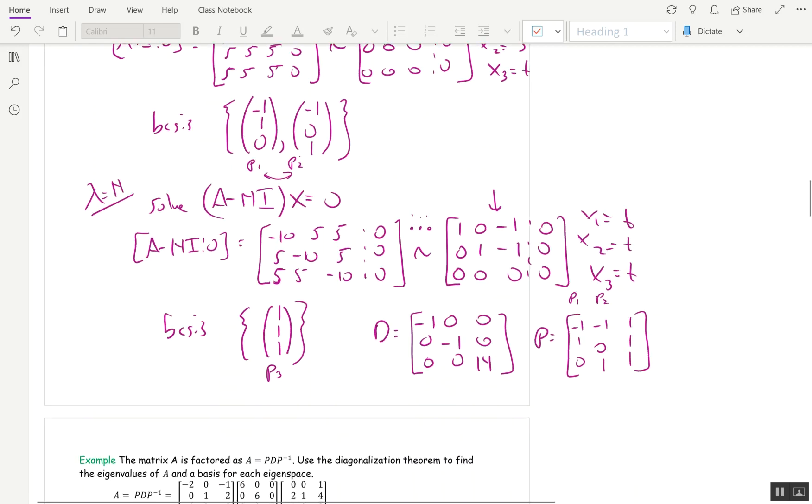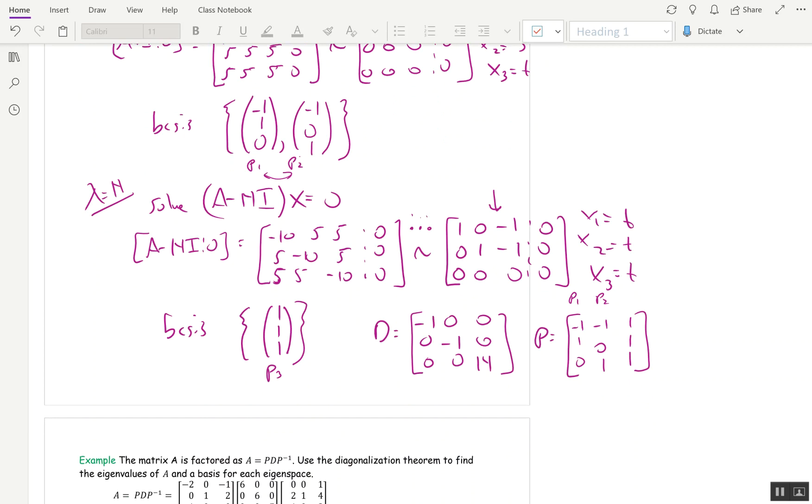And so that would be one possible answer. And if I wanted D with, let's say, negative 1, 0, 0, 0...